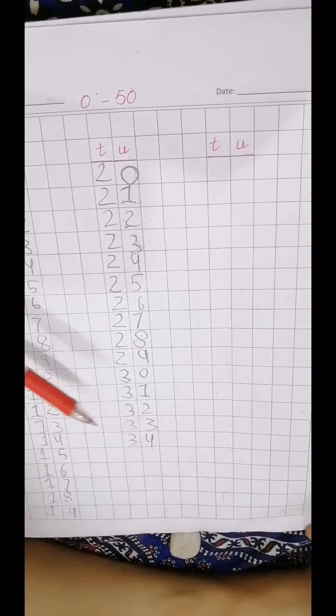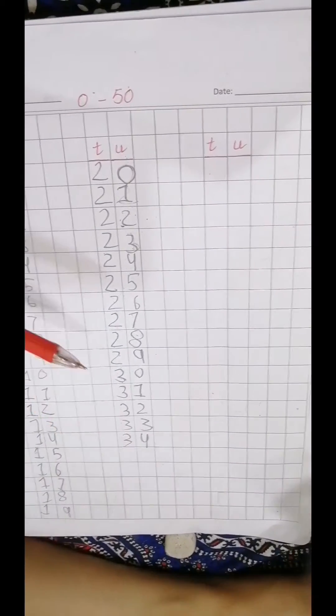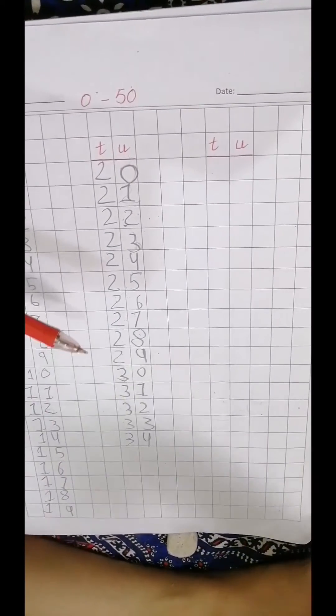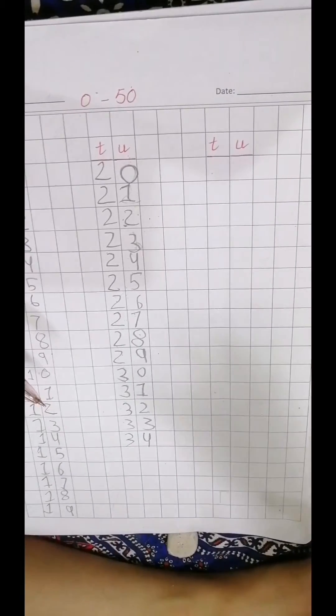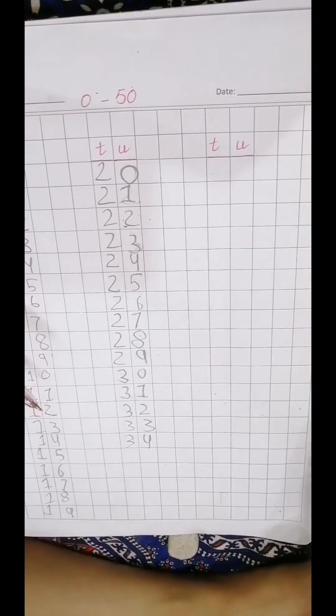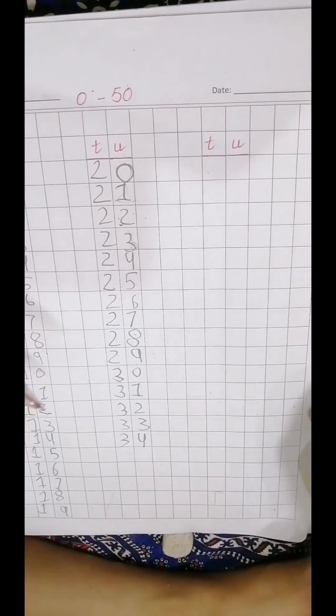How many tens in thirty-four? Three. And how many units? Three tens and four units make thirty-four.